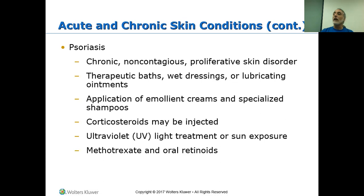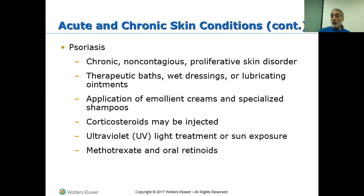Antihistamines may be used for psoriasis — it's a proliferative disorder where the skin cells are reproducing rapidly, causing those plaques that you see. Therapeutic baths, wet dressings — because you are trying to break it down — and lubricating ointments to help slough the proliferative skin. Specialized shampoos, corticosteroids, ultraviolet light treatment, and there are also chemotherapeutic agents like retinoids and methotrexate that may be used to treat psoriasis.